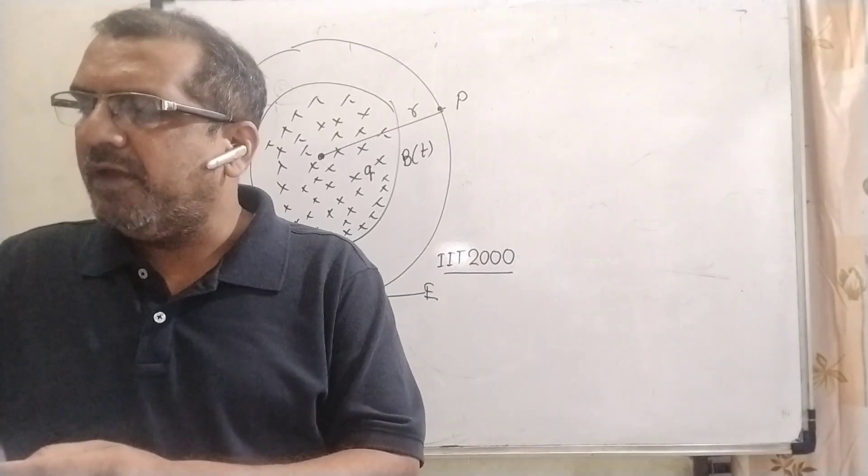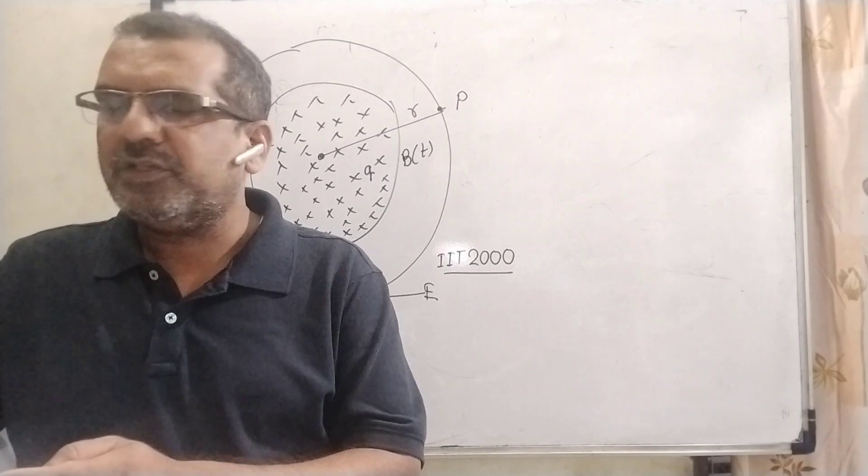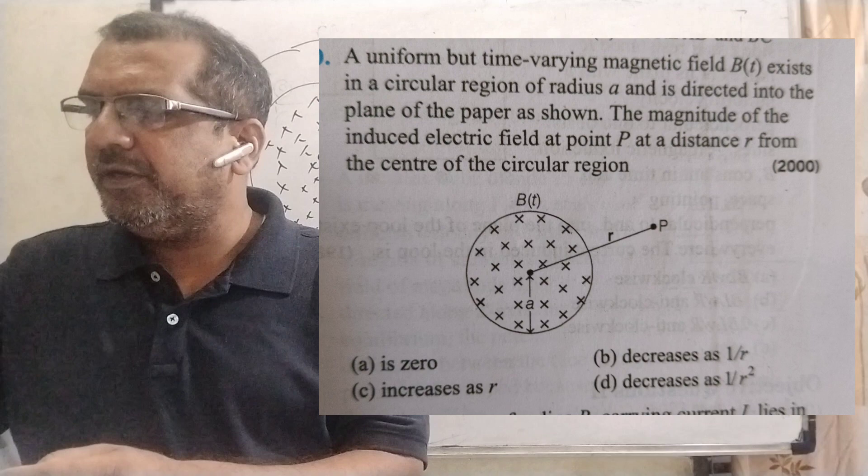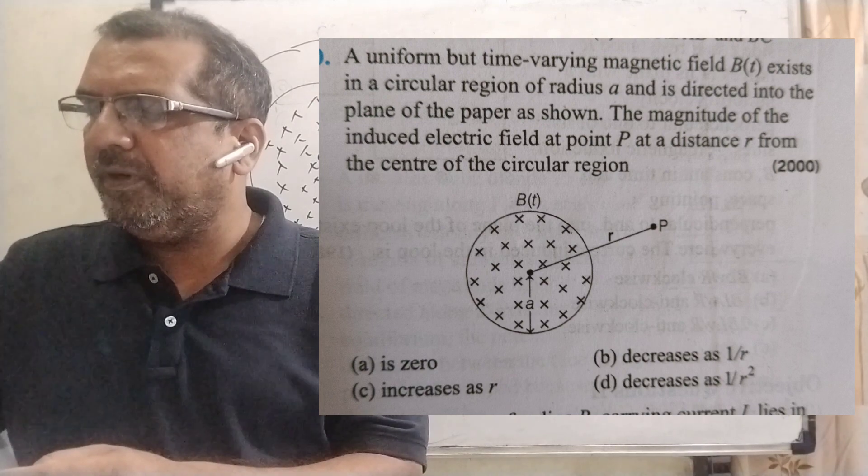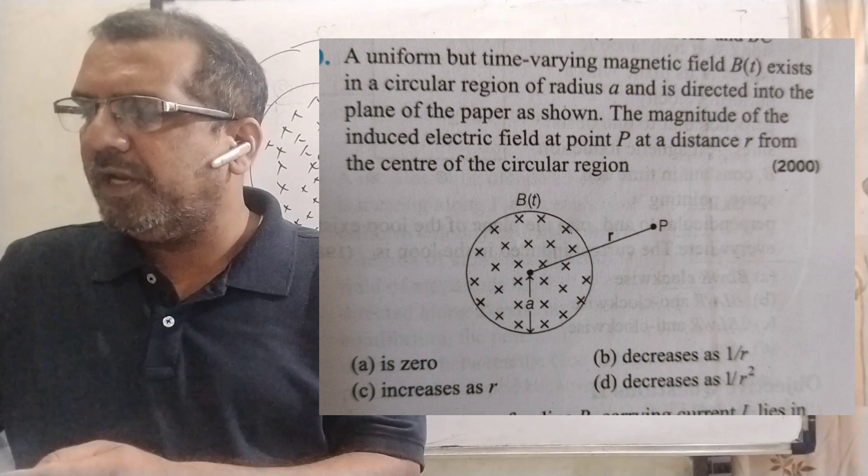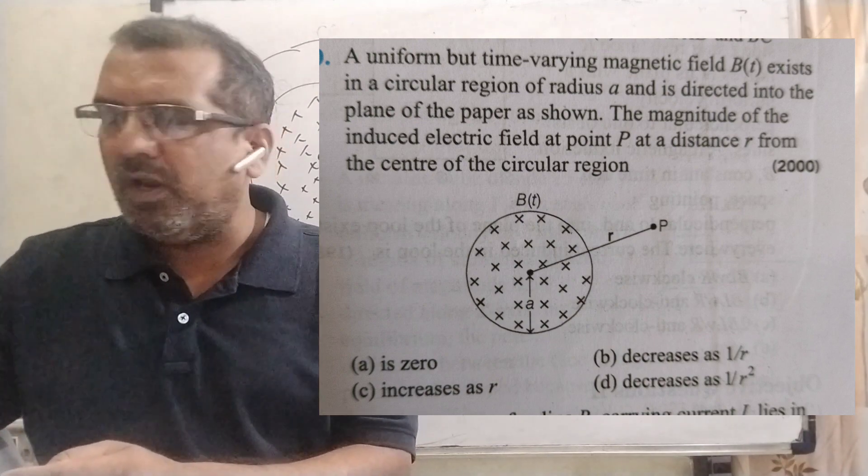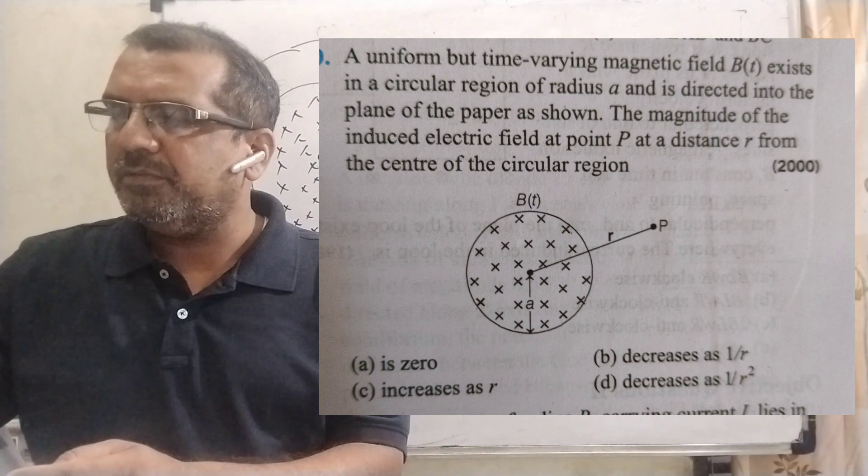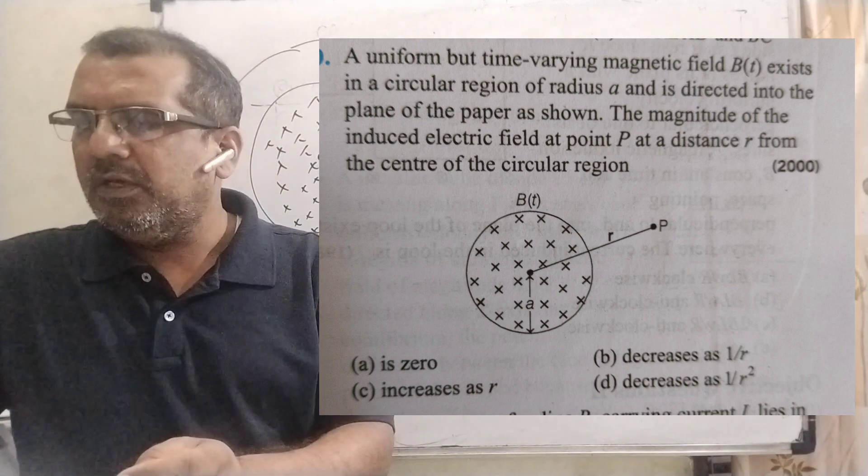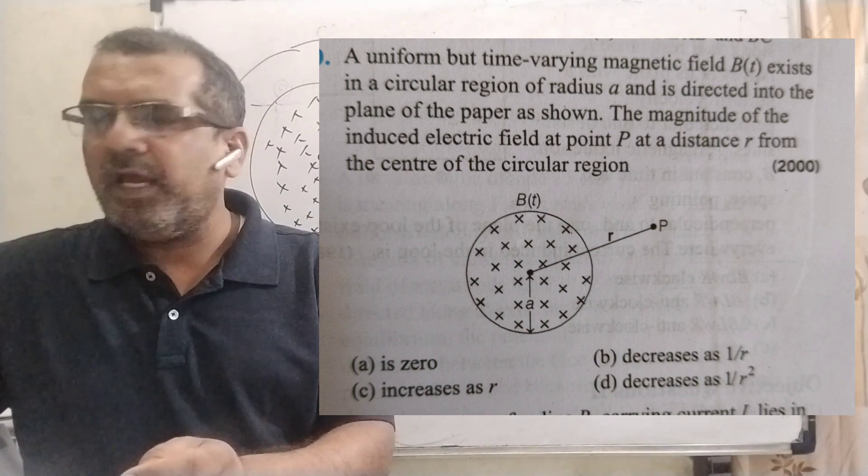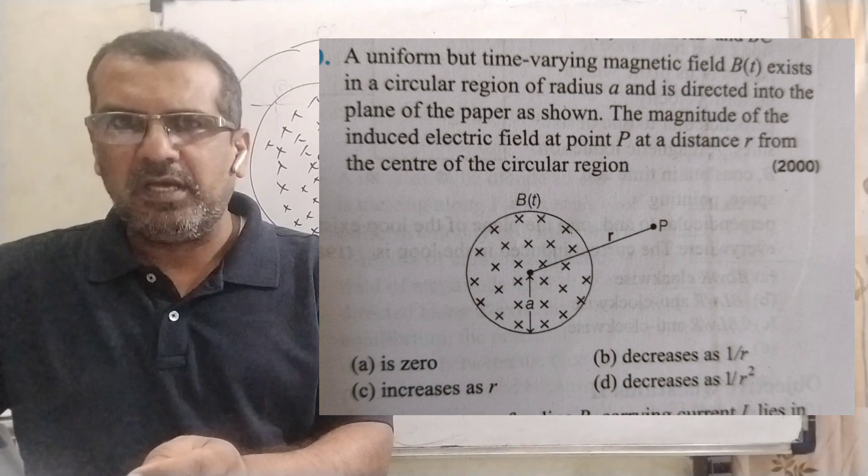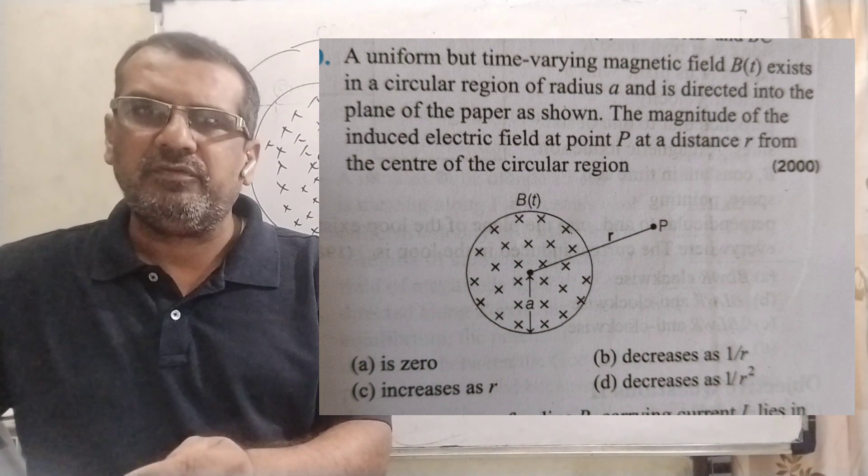Here is the question. A uniform but time-varying magnetic field B(t) exists in a circular region of radius a and is directed into the plane of the paper as shown. The magnitude of the induced electric field at point P at distance r from the center of the circular region. Four options are given: (a) is zero, (b) decreases as 1/r, (c) increases as r, (d) decreases as 1/r².